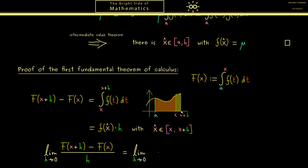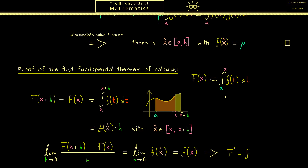In the limit as h tends to 0 we look at what happens to f(x̂). As h gets smaller and smaller we don't have many choices for x̂, and since f is a continuous function we get f(x) in the limit. So the derivative of capital F exists and F'(x) equals lowercase f(x) — capital F is an antiderivative of lowercase f. The first fundamental theorem of calculus is proven: such an integral always gives an antiderivative.